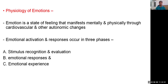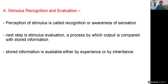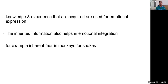Physiology of emotion: Emotion is a state of feeling that manifests mentally and physically through cardiovascular and other autonomic changes. Emotional activation and responses occur in three phases: stimulus recognition and evaluation, emotional response, and emotional experience. Perception of a stimulus is called recognition or awareness of a sensation. The next step is to evaluate that stimulus by comparing output with stored information, which is available either by experience or by inheritance. For example, there is an inherent fear in monkeys for snakes.